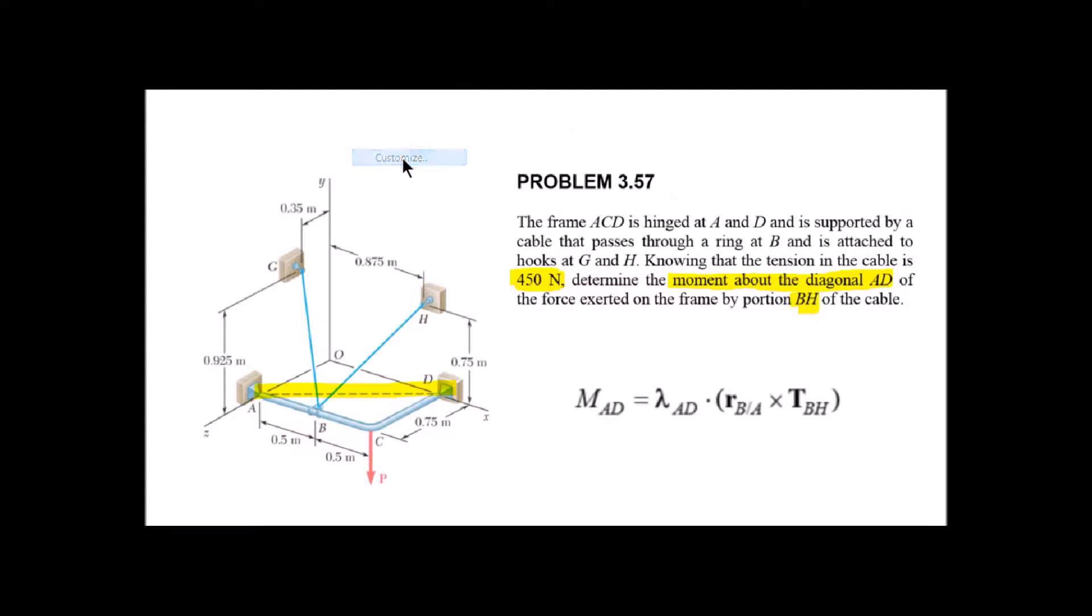We're going to get the moment from just one of the pieces of cable, so the portion BH of the cable. So here's our force, it's BH, so we're going to ignore P, we're going to ignore BG, we're just going to look at this one force acting on it and that's our 450 Newton force.